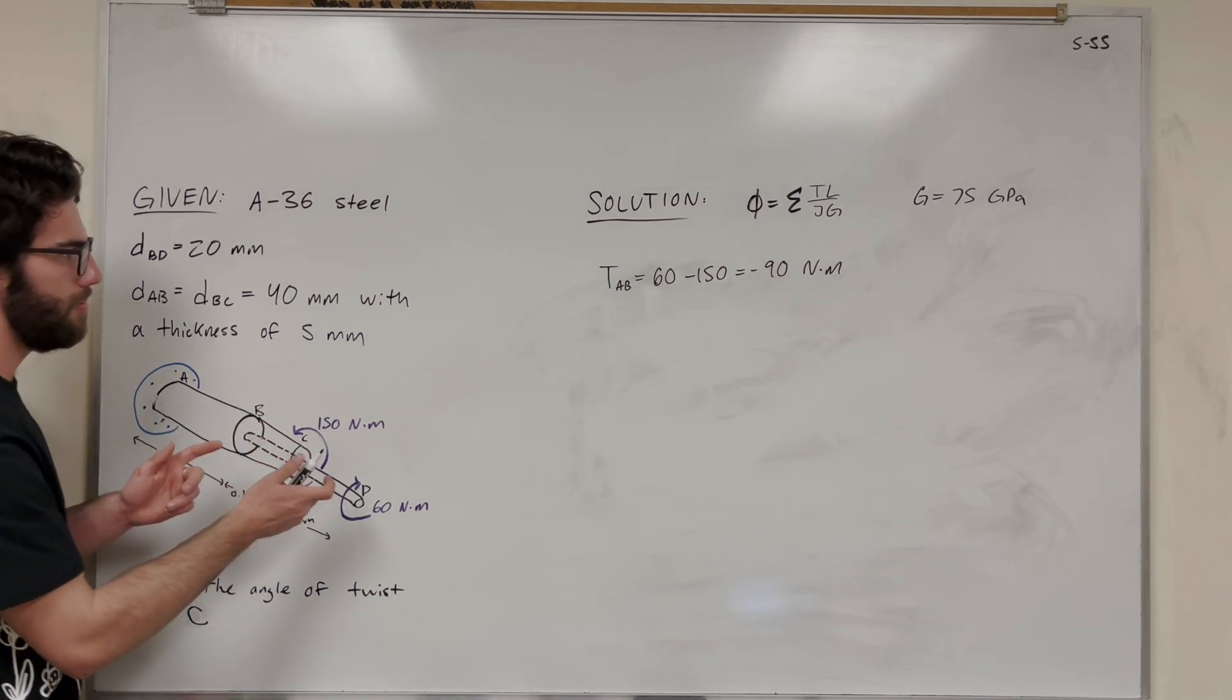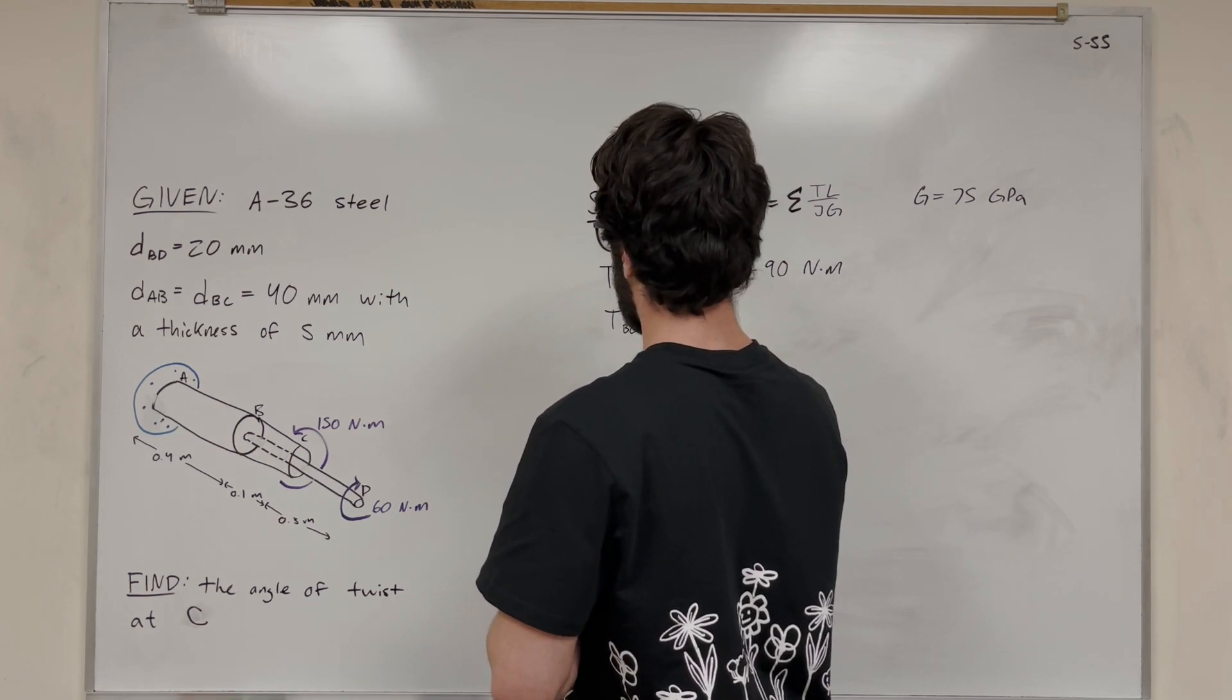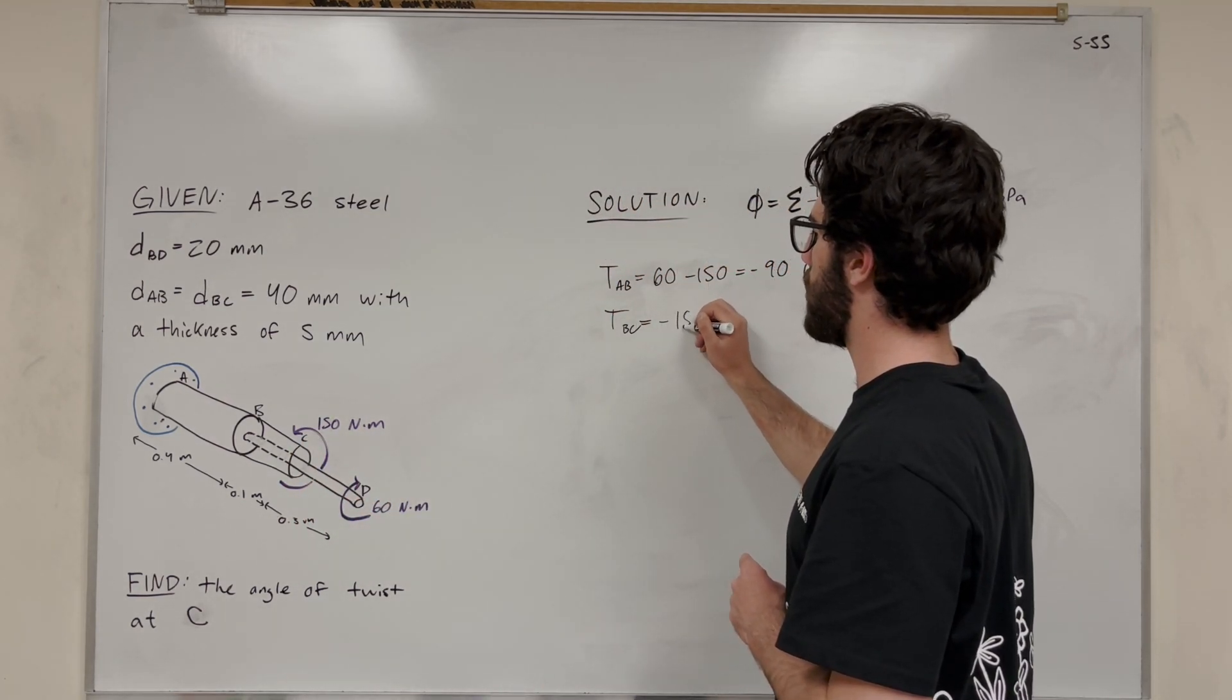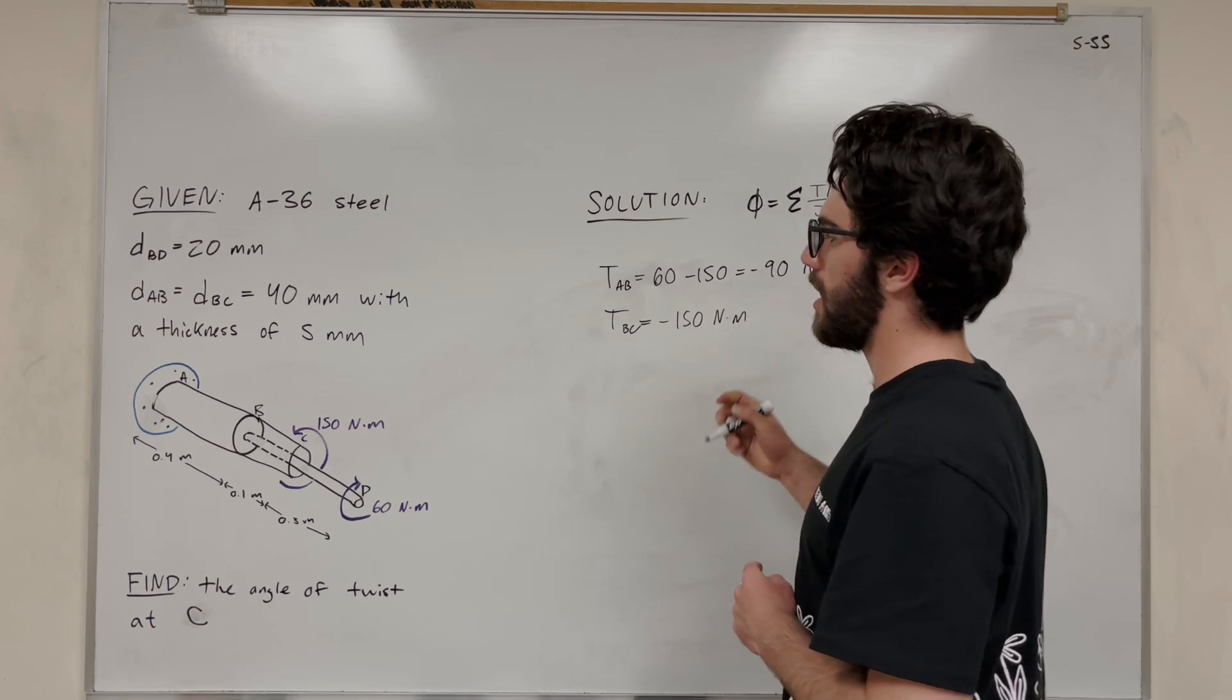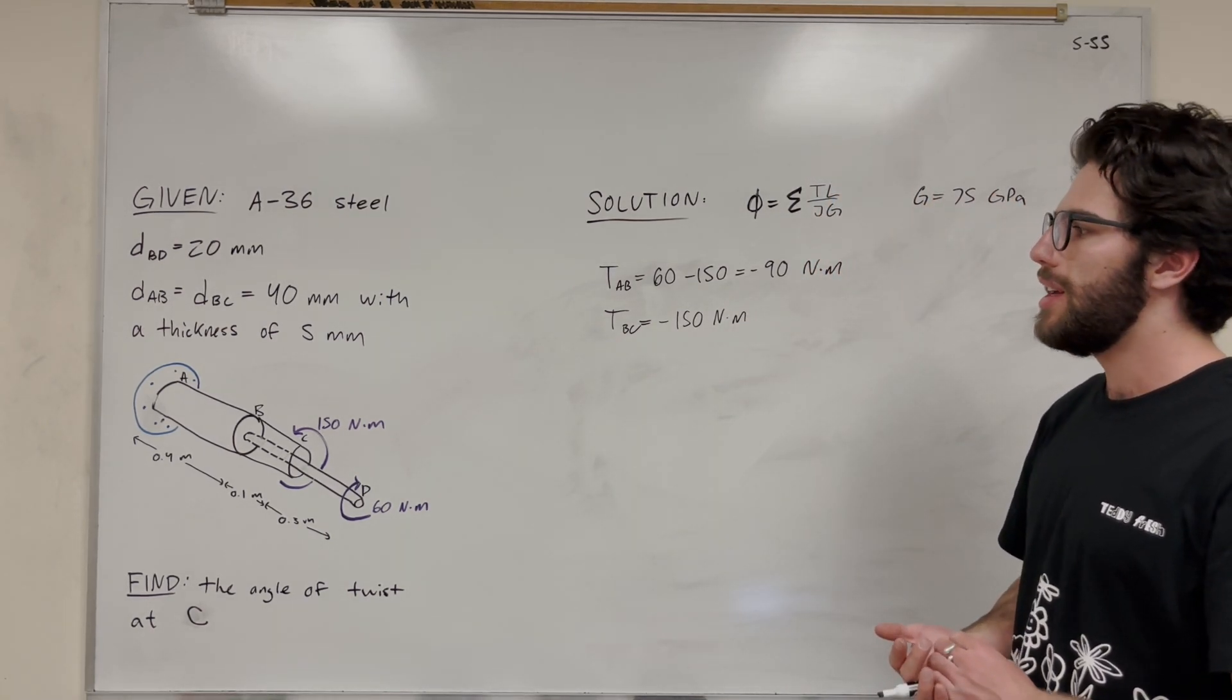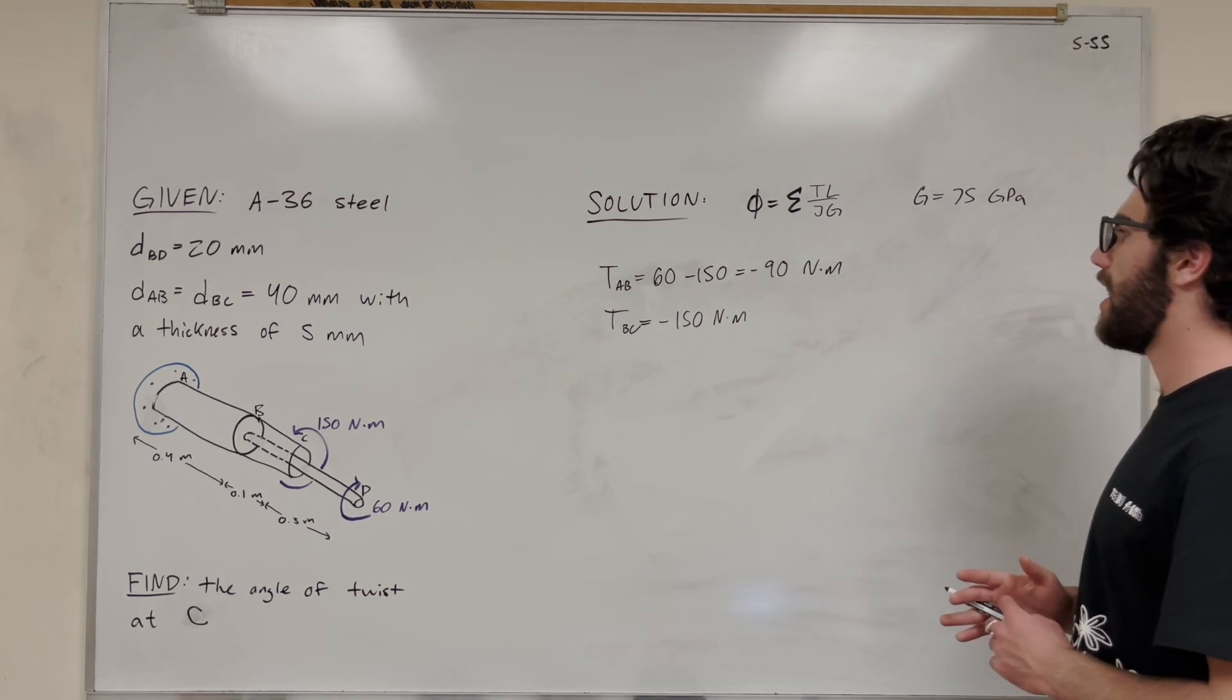The torque in BC is not going to have anything to do with this torque because this only affects AB, which we already accounted for. The torque in BC is just going to be equal to that torque getting applied at C, which is negative 150 Nm. Because we said that negative is going clockwise. It doesn't really matter which way you make it go, as long as they're both negative or both positive. You have to pick a direction for positive and negative.